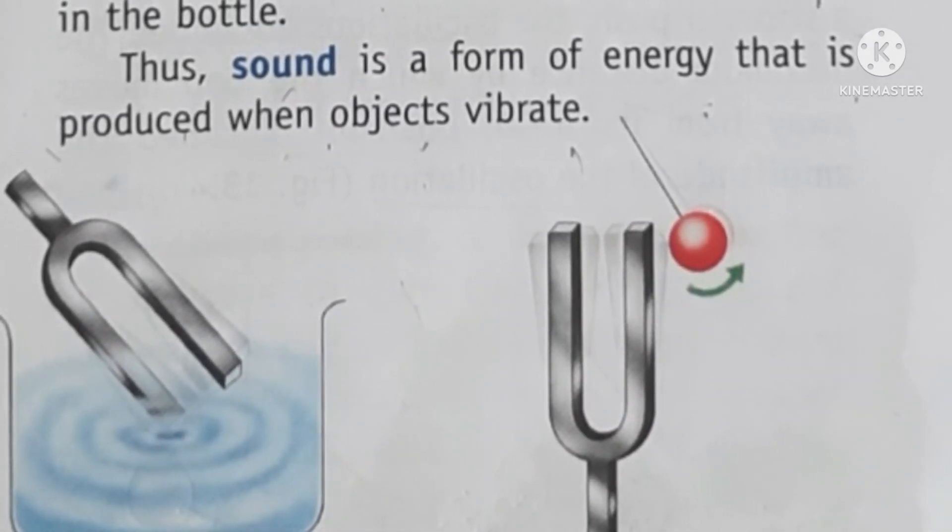The to-and-fro movement of any object is called vibration. When an object is in a fixed position with no to-and-fro motion, there is no vibration and no sound produced. But when I pluck the rubber band, it moves to one side and then the other — vibration is produced, and because of this vibration, sound is produced.